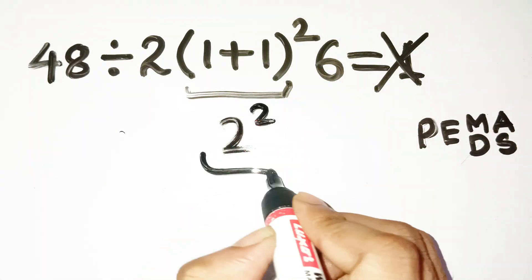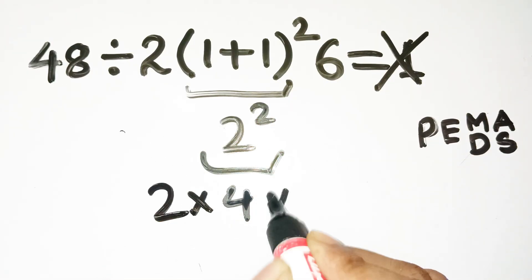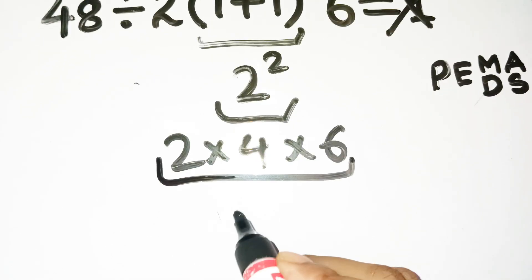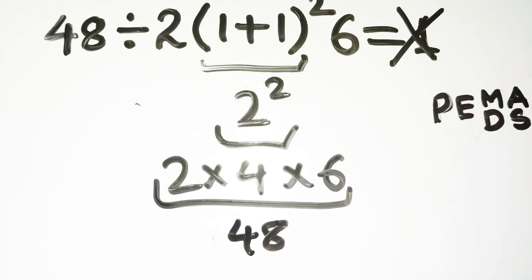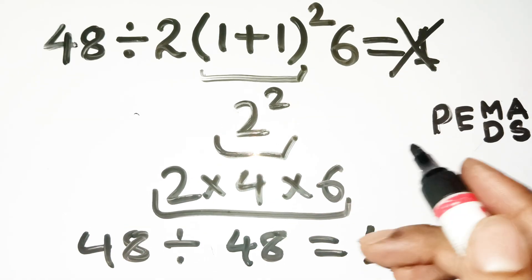Then the square makes it 4. And now it feels natural to multiply the left 2 and the right 6 with that 4, giving you 2 times 4 times 6, which equals 48. So 48 divided by 48, ta-da! 1. Perfect symmetry, perfect logic. Except, it's perfectly wrong.